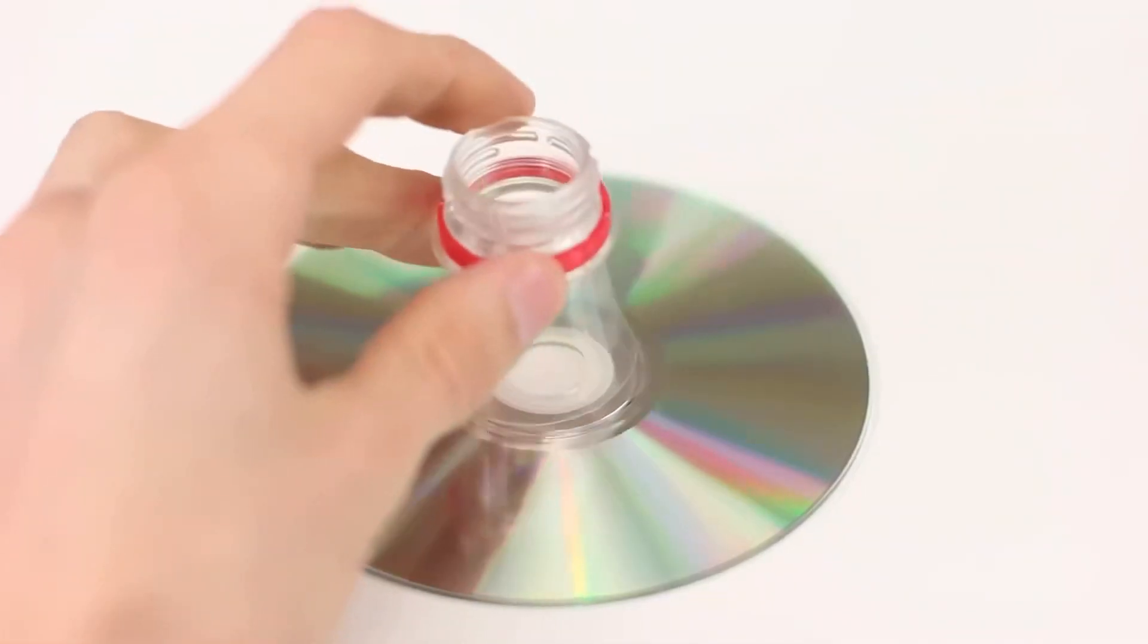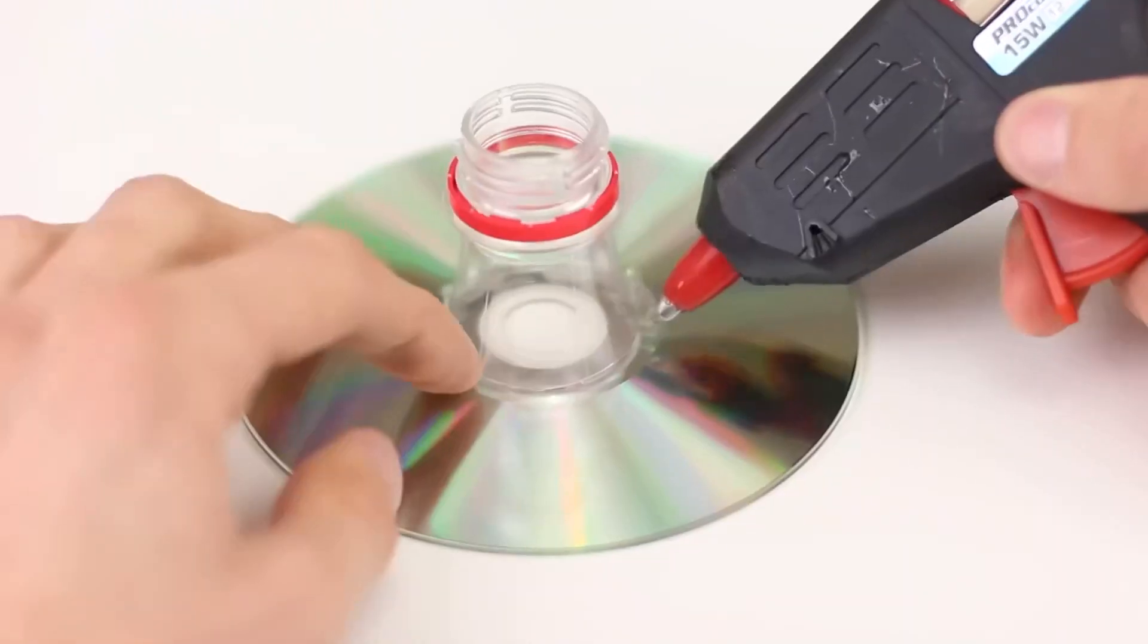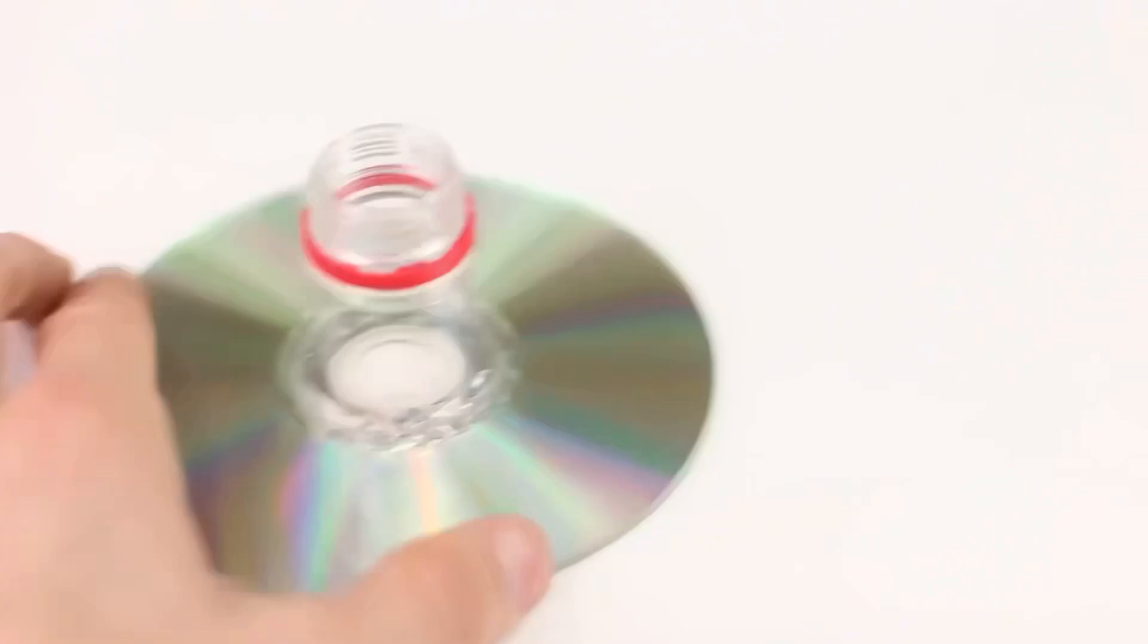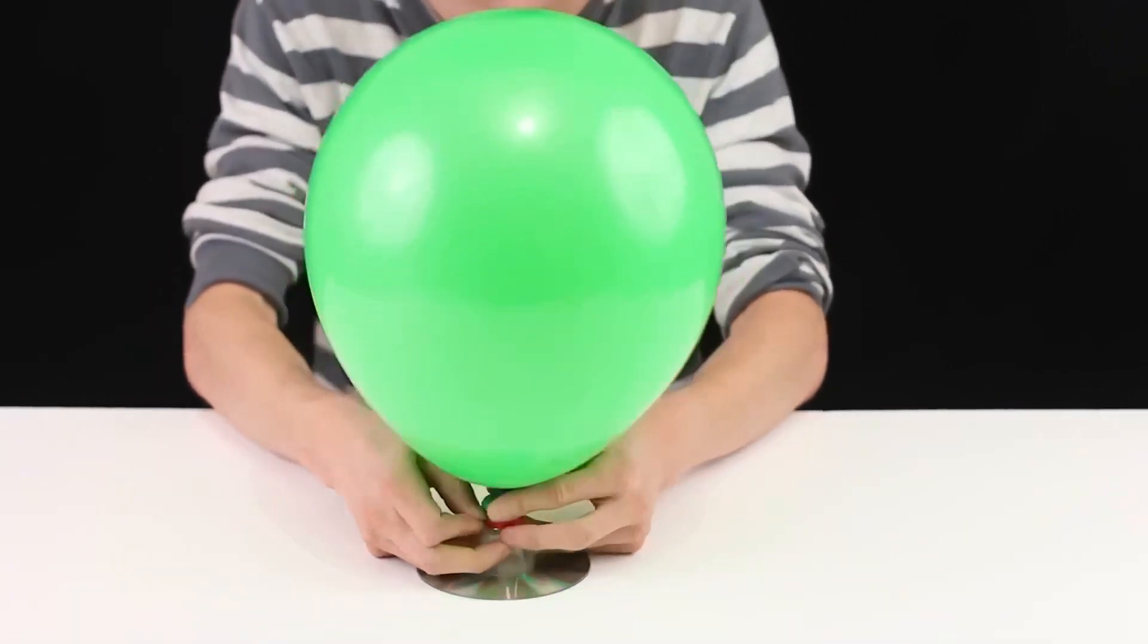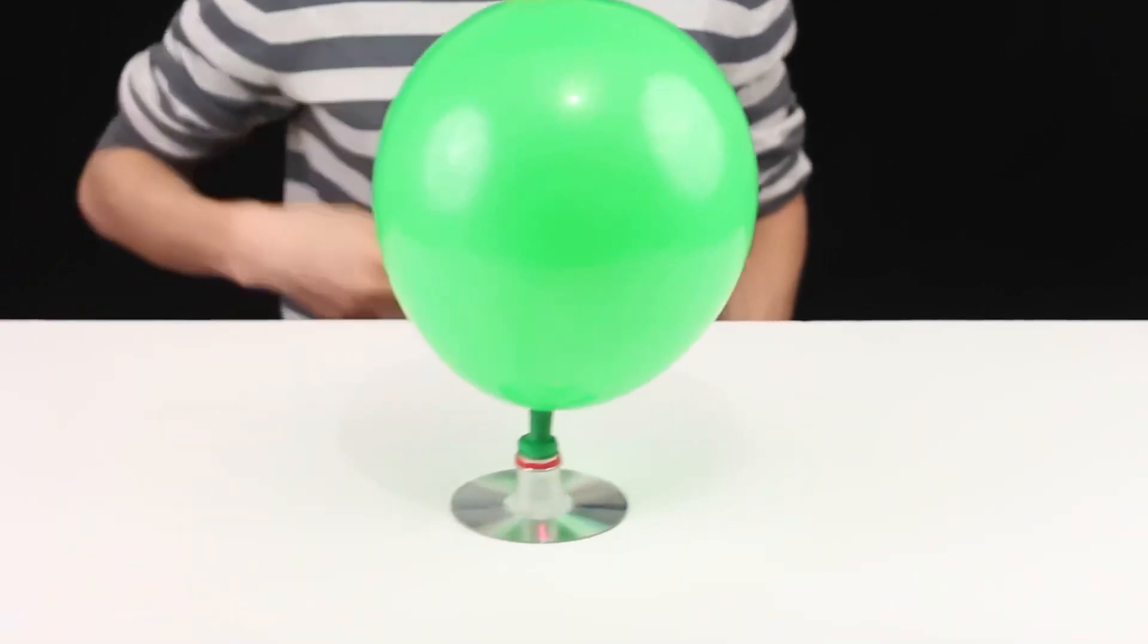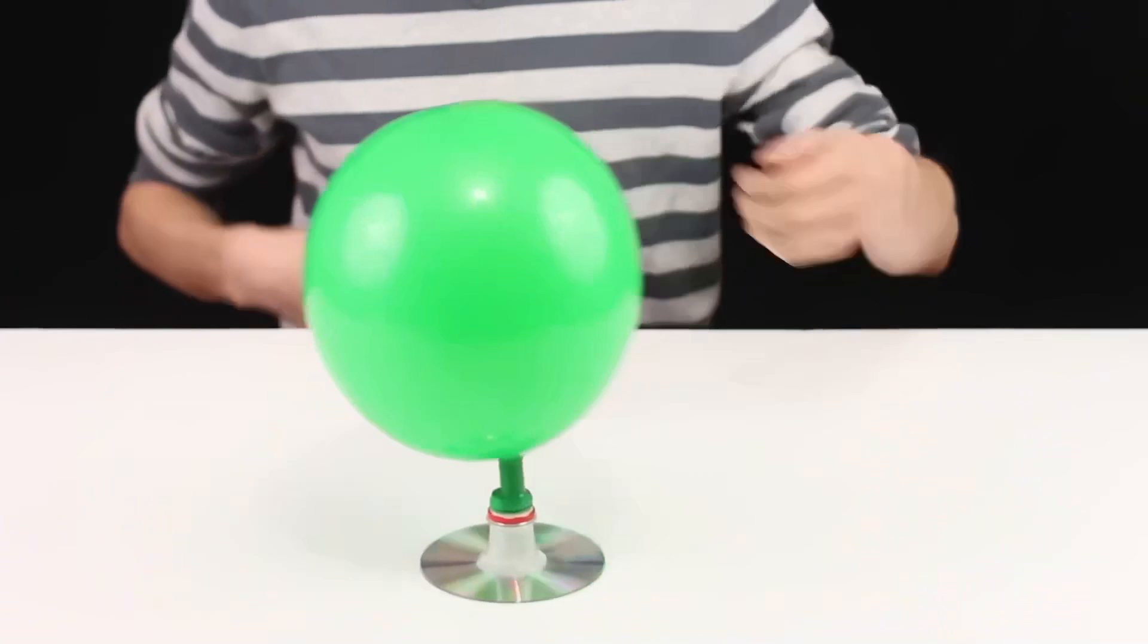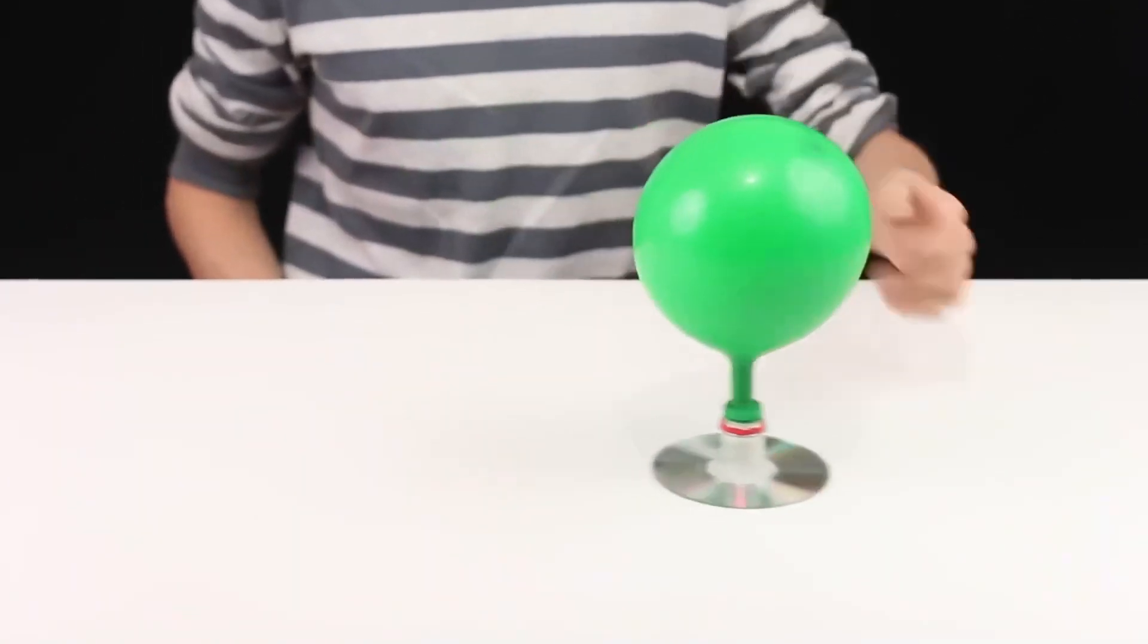Let's take the neck of a bottle and glue it to the CD with a glue gun. Now, pull a well-inflated balloon over the neck. We fix everything tightly. And release the structure. It begins to slide on the surface of the table. And with a little slight push, you can set any direction until the balloon runs out of air. Incredible, isn't it?